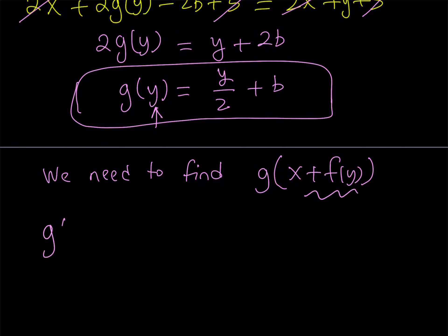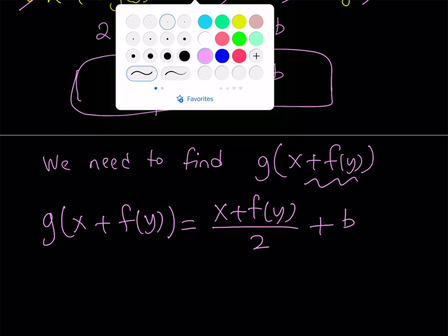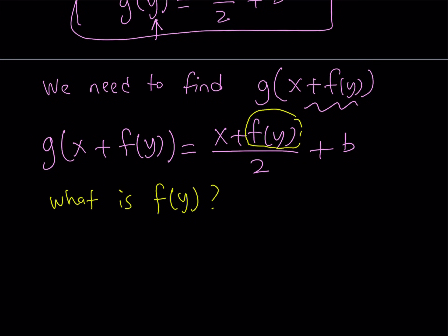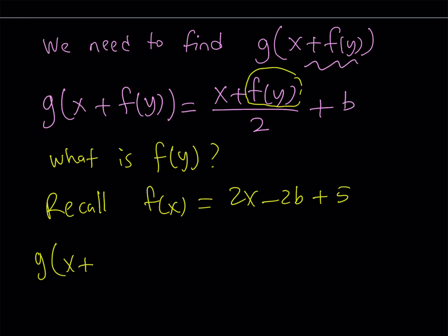Let's go ahead and do it. So g of x plus f of y is equal to x plus f of y divided by 2 plus b. So this is what we're trying to find. But what is f of y? Well, we do have an expression for f of x. So we can use that to find f of y. Let's recall that f of x is equal to 2x minus 2b plus 5. So to find f of y, all you have to do is replace x with y. So what we're trying to find, g of x plus f of y equals x plus f of y, which is 2y minus 2b plus 5 all over 2 plus b.